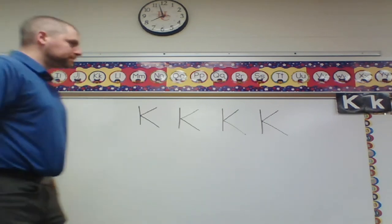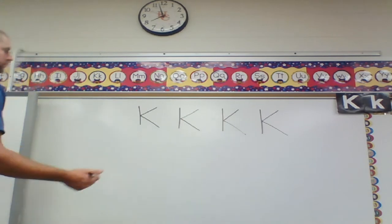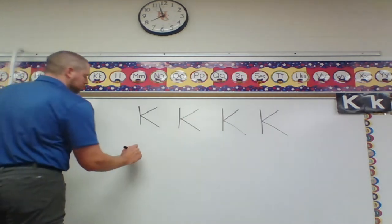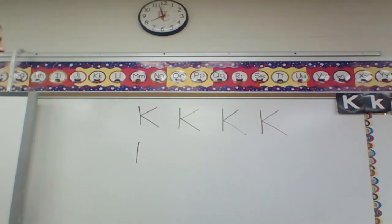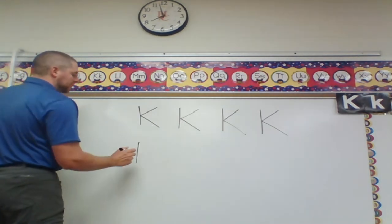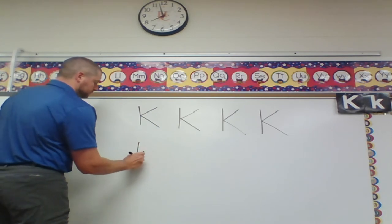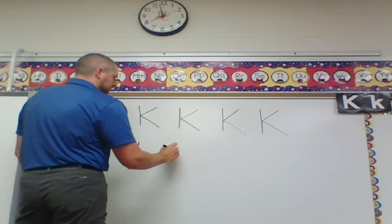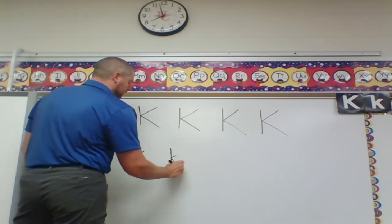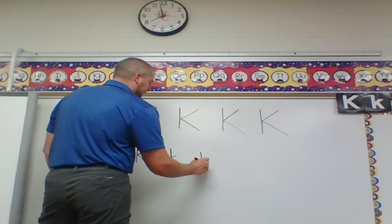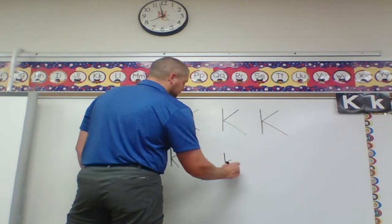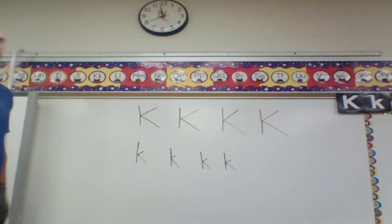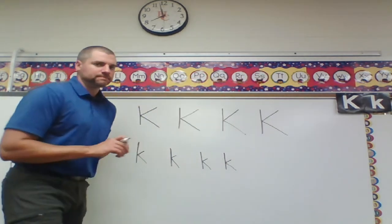Now let's talk about lowercase k. Lowercase k is a very similar shape, and it's still going to start with a very tall line that goes from the top to the bottom. The only thing that is different about lowercase k is when we make our other two lines, they're just a little smaller — the slanted lines aren't as big as my capital K. Practice doing that on your own paper. Make sure your lowercase k's do look a little bit smaller than your capital K's.